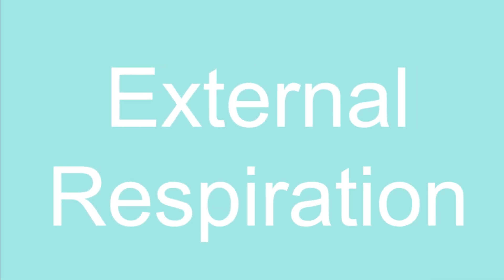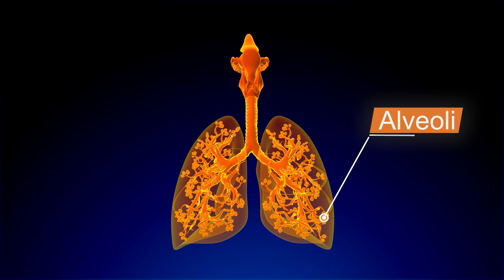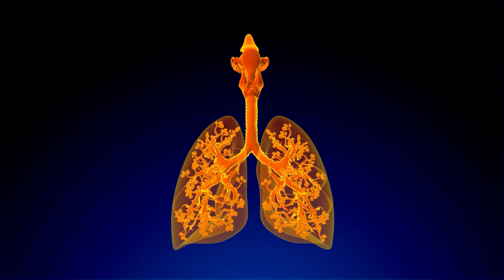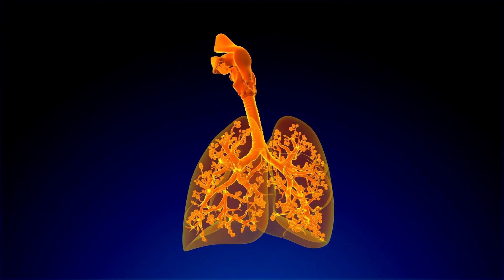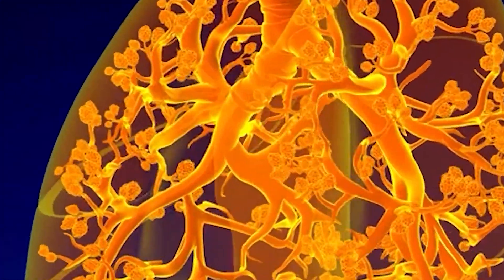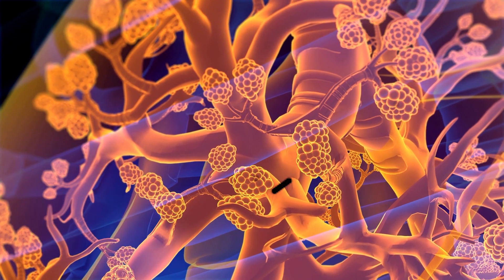At the end of the lungs are hundreds of round air sacs called the alveoli, which inflate during inhalation and deflate during exhalation. The alveoli serve as the site of respiration in the lungs, where exchange of gases occurs.